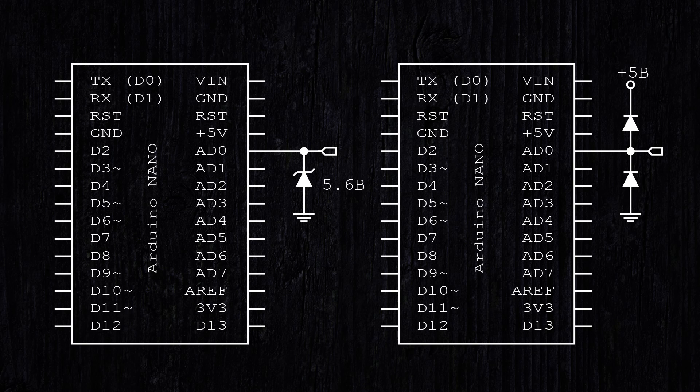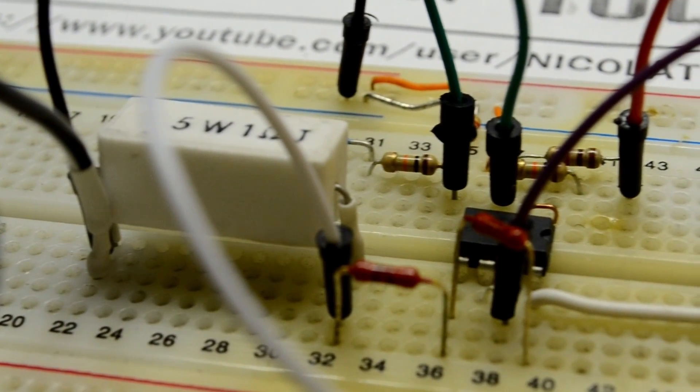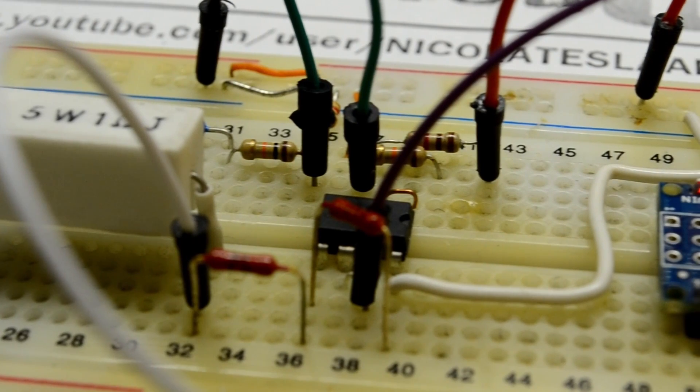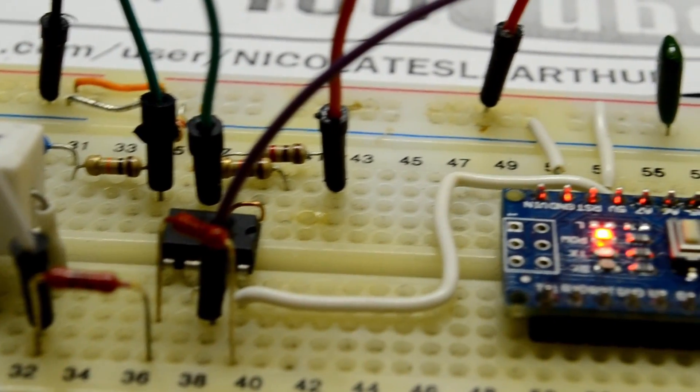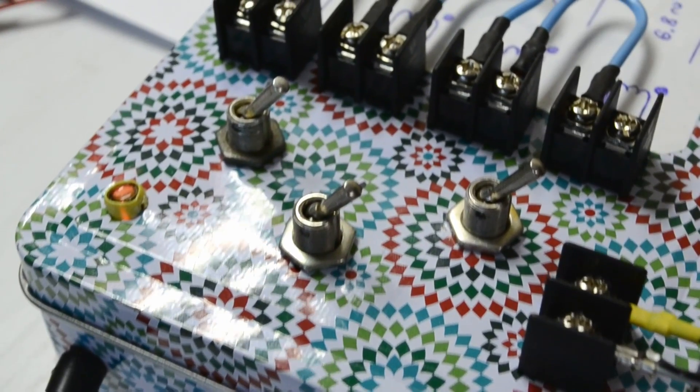Note that it is advisable to secure the microcontroller inputs using 5.5V zener diodes so that the input voltage never exceeds this value. And during experiments, before turning on Arduino, I advise you always to check the voltage with a multimeter or oscilloscope.